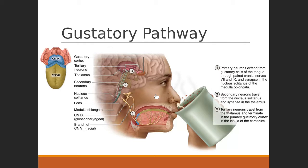Tertiary neurons travel from the thalamus to the primary gustatory cortex of the cerebrum. If we were to look at a lateral view of the brain and pull apart the border of the temporal lobe with the frontal and parietal lobes, the insula would be in that crevice — and that's where we would see the primary gustatory cortex.